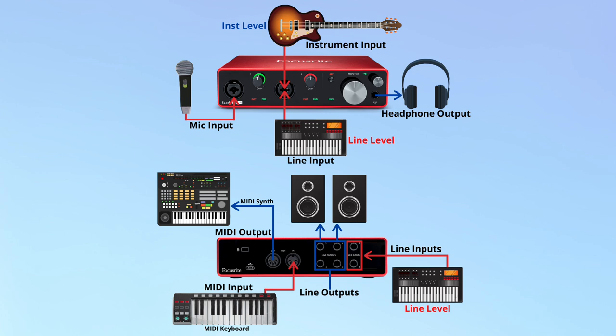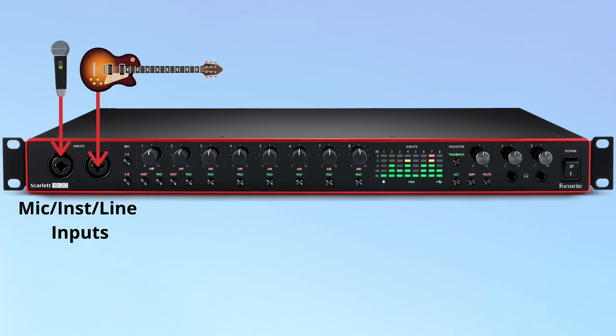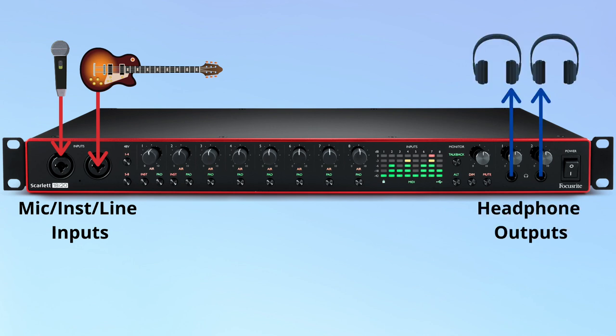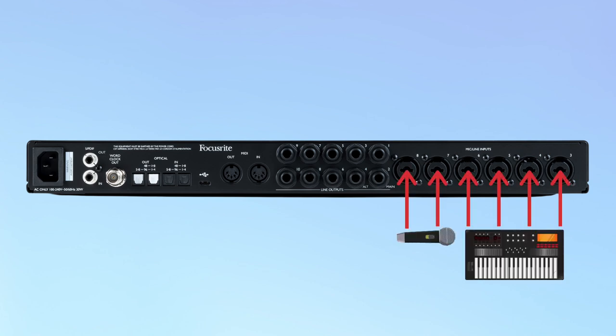Next we're going to look at the largest audio interface from Focusrite's Scarlet series — the 18i20. This model features the most common inputs and outputs that you find on more advanced interfaces. On the front there are two microphone, instrument, and line inputs, and to the right there are two headphone outputs, which is straightforward enough. The back looks intimidating, but once we break it down it's not that complicated. First you can see more mic inputs and line inputs for line level instruments.